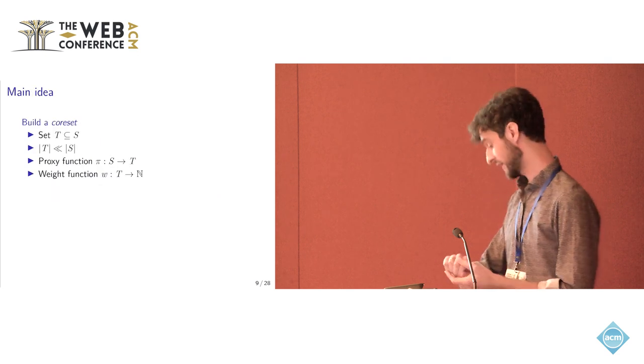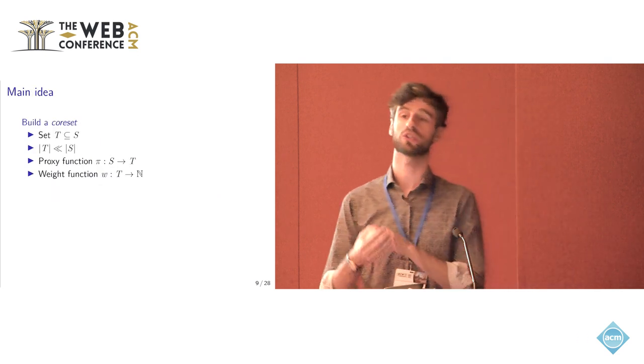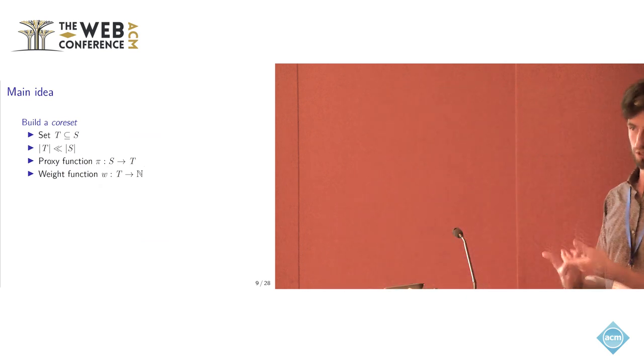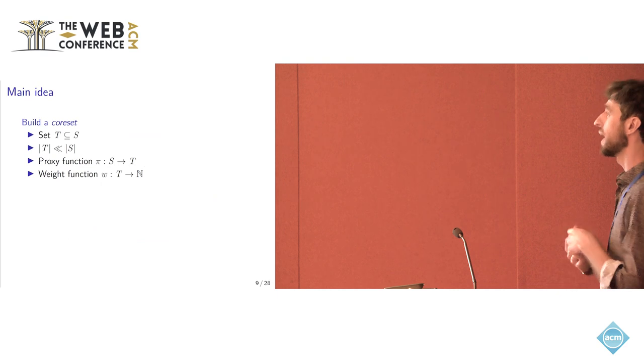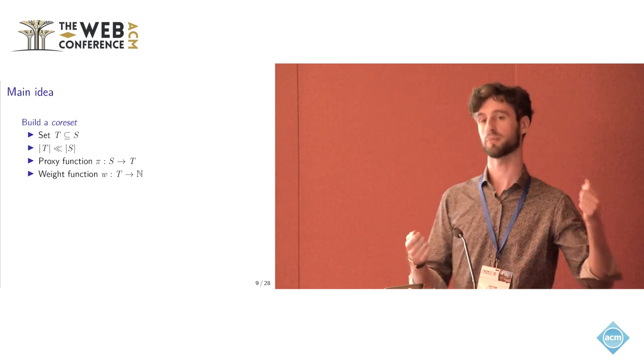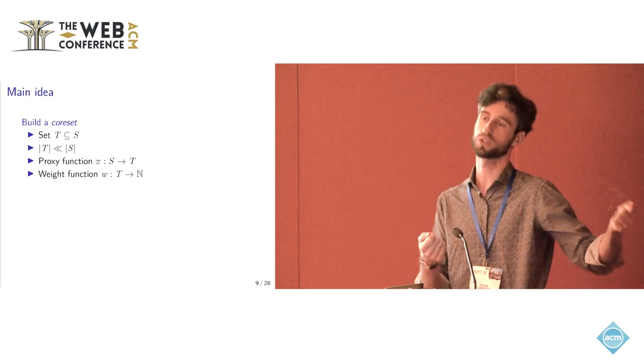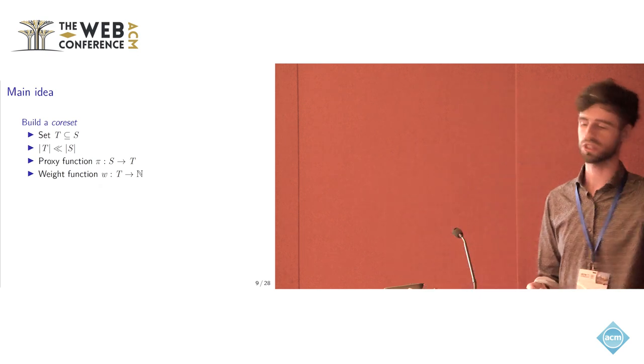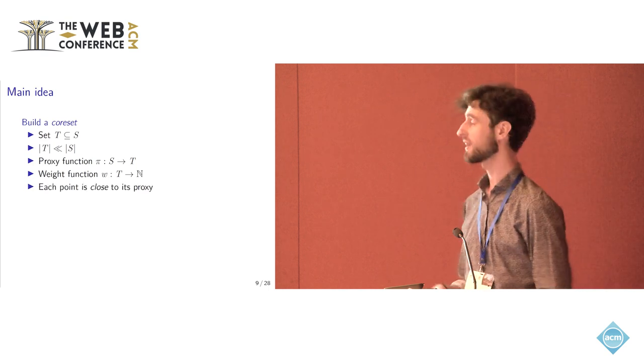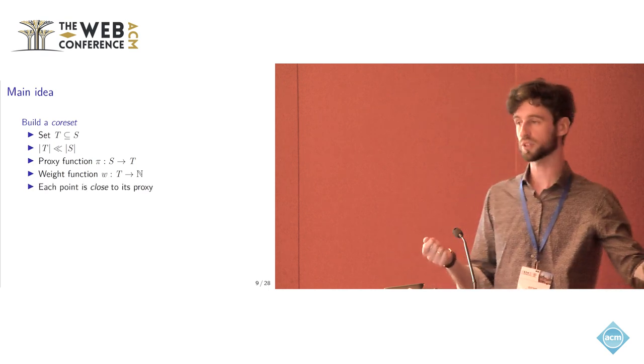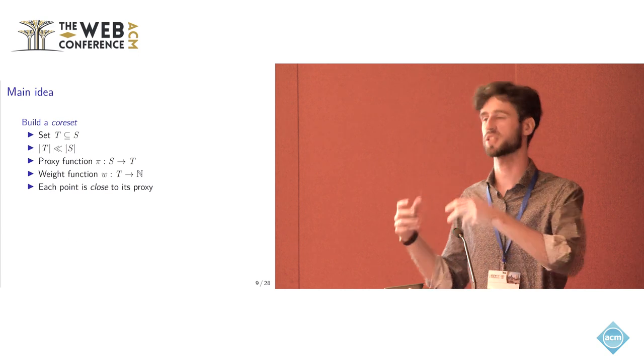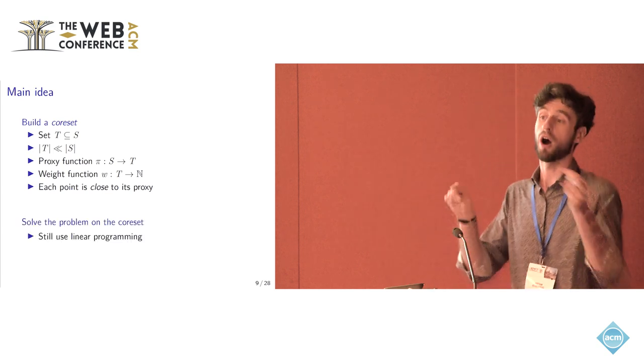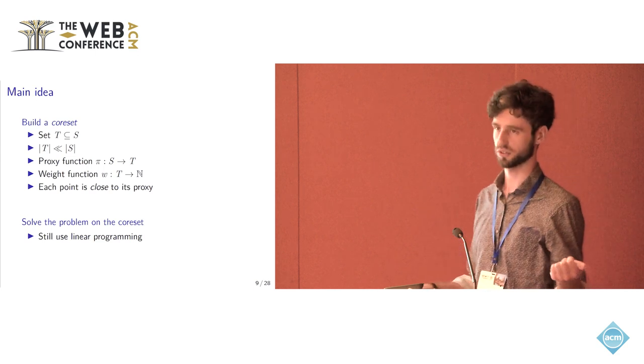And the main idea of our approach is to use so-called core sets. The core set is basically a small subset of the input equipped with a proxy function that assigns each point of the input to a representative and a weight function. So the core set points are weighted with the idea that each point of the input has a very close representative. So the core set is a good representation of the entire input.